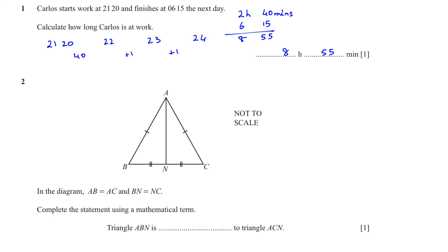In the diagram, AB is equal to AC and BN is equal to NC. Complete the statement using a mathematical term. Triangle ABN is congruent to triangle ACN. It is congruent because they have two equal sides, therefore the angles are going to be equal, and the third angle which is 90 degrees is also equal.